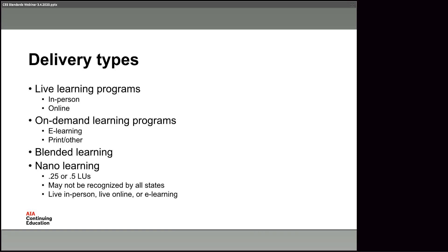The new standards also acknowledge two new types of learning. One is blended learning — a combination of delivery types. For example, a course might have an in-person kickoff workshop, followed by on-demand e-learning modules and webinars participants complete on their own time, then live online sessions, and finally an in-person capstone event. There is a lot of power to this cohort-based approach. Our old policy guidelines didn't know what to do with these programs, so we've updated the new standards to include how we handle blended learning.